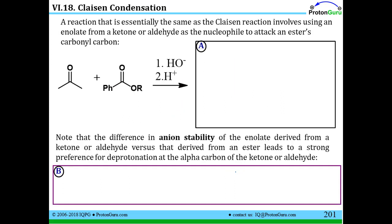Now another reaction that's essentially the same as the Claisen reaction involves using an enolate from a ketone as the nucleophile. A ketone or aldehyde will work. And then that nucleophile will attack the ester. And this reaction works effectively because you can take a weaker base like hydroxide that's not very good at deprotonating an ester to make the enolate. You can get the ketone or aldehyde deprotonated and have that attack.